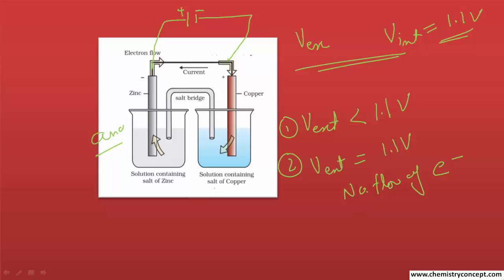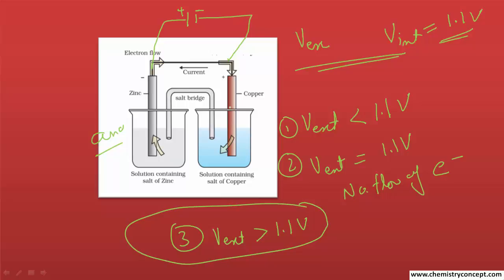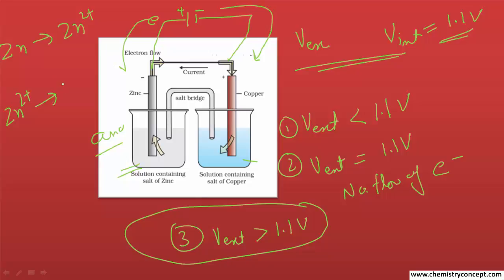If we further increase the external potential beyond 1.1 volts, the cell starts working in reverse. The electrons from the external battery drive the reactions in reverse — instead of zinc converting into Zn²⁺, now Zn²⁺ starts converting back into zinc. We are now using external electrical energy to carry out a reaction that was otherwise non-spontaneous. The cell is now working like an electrolytic cell.